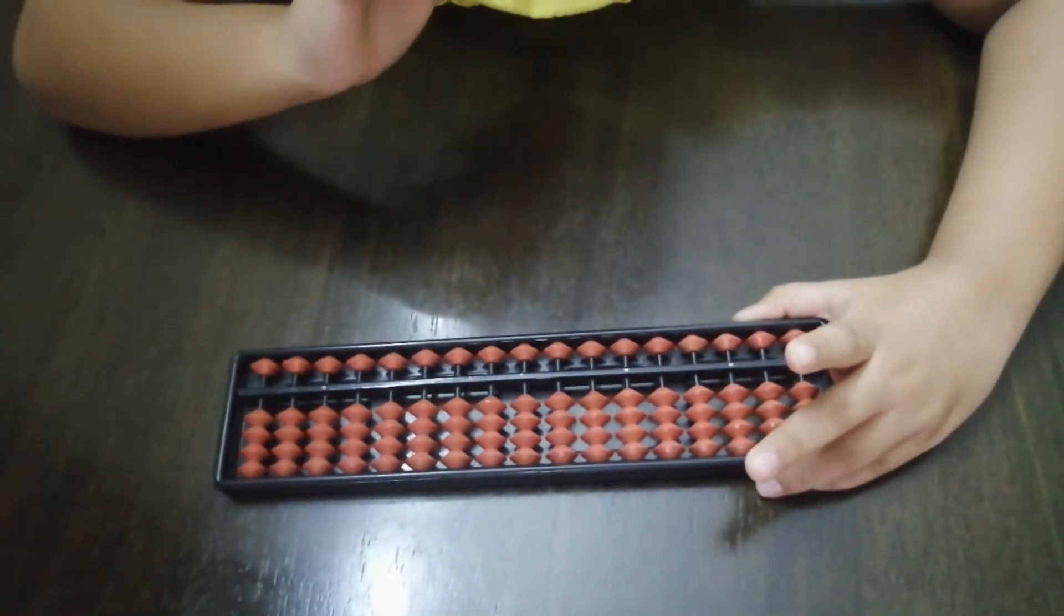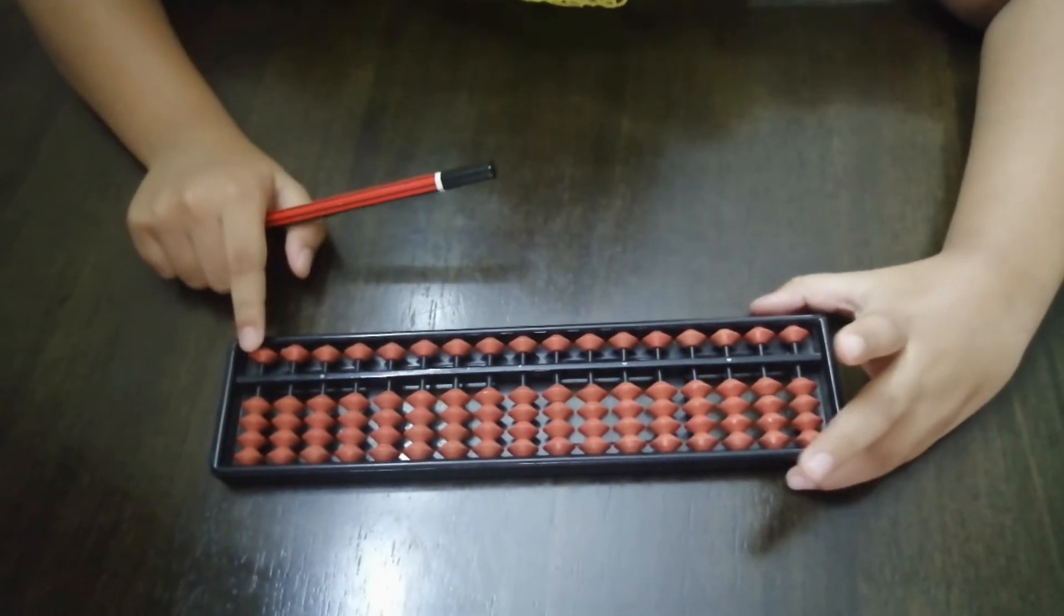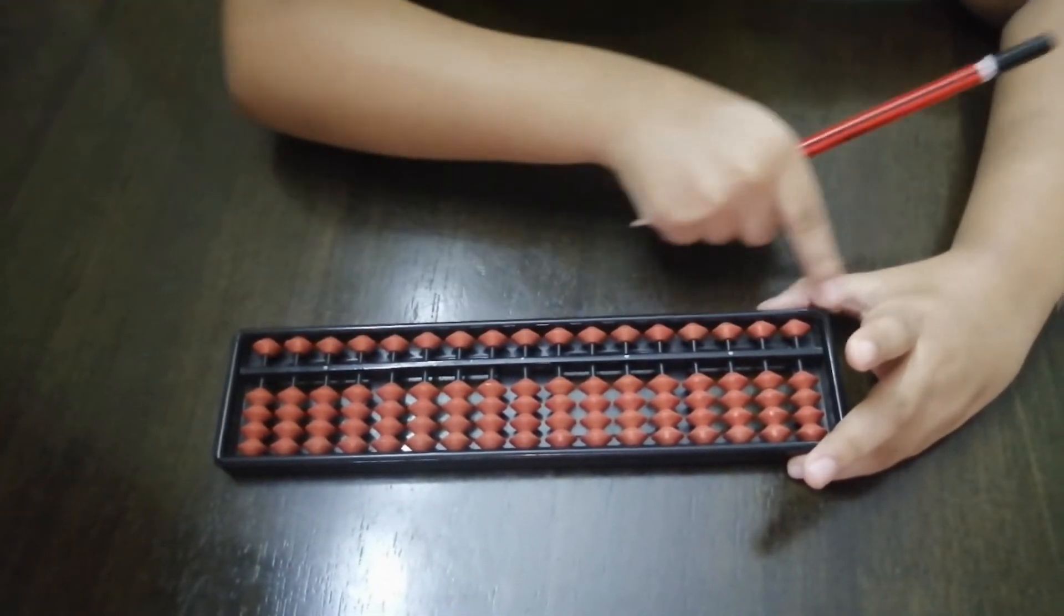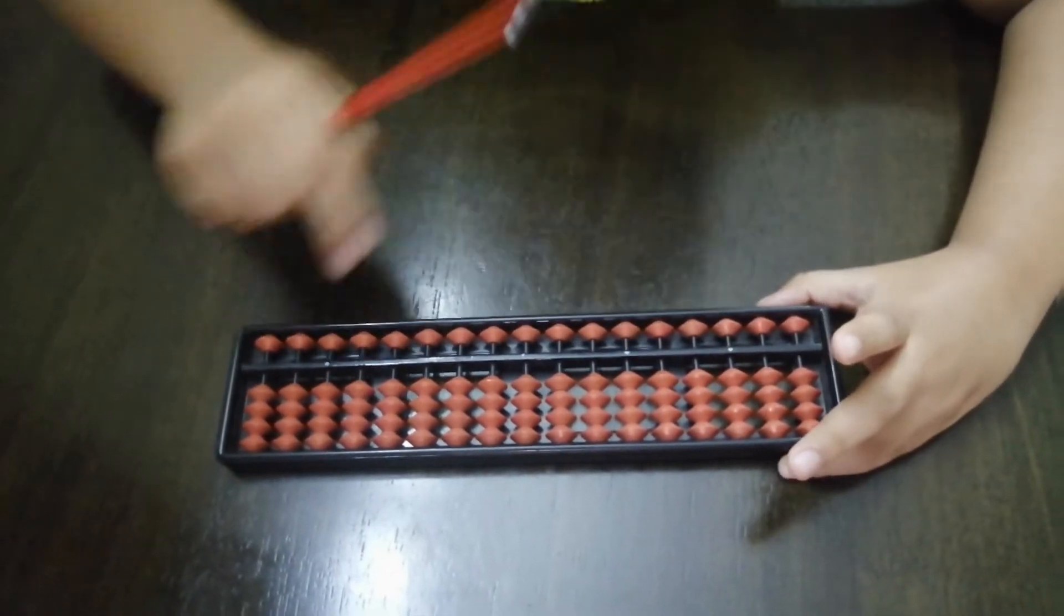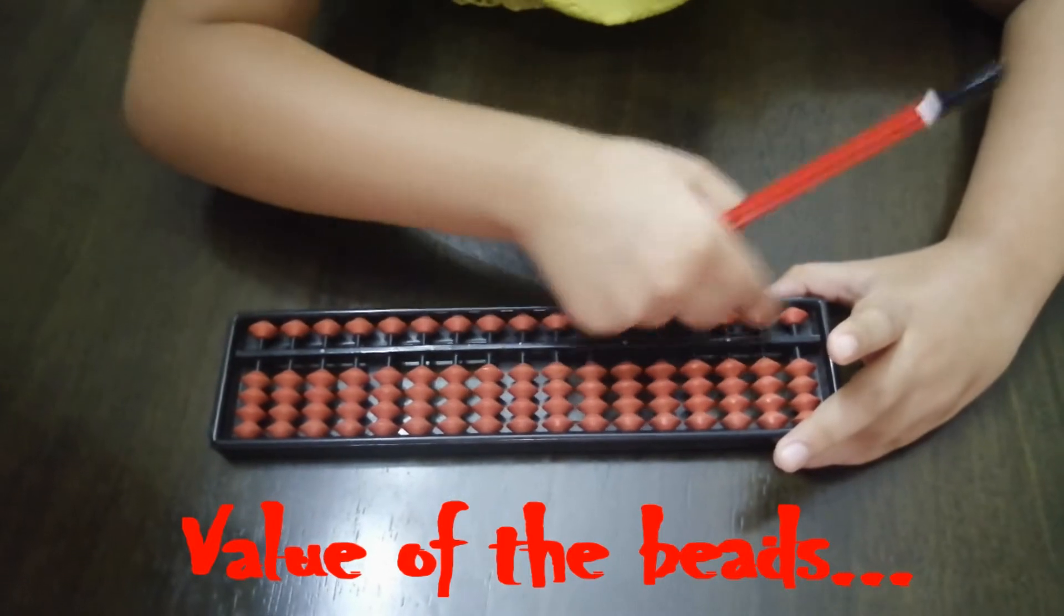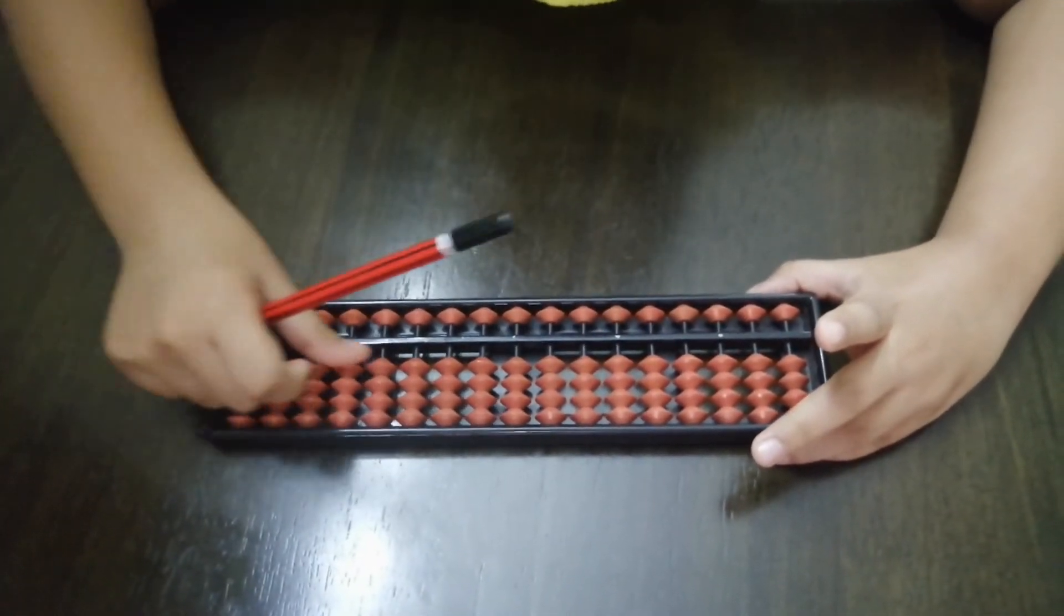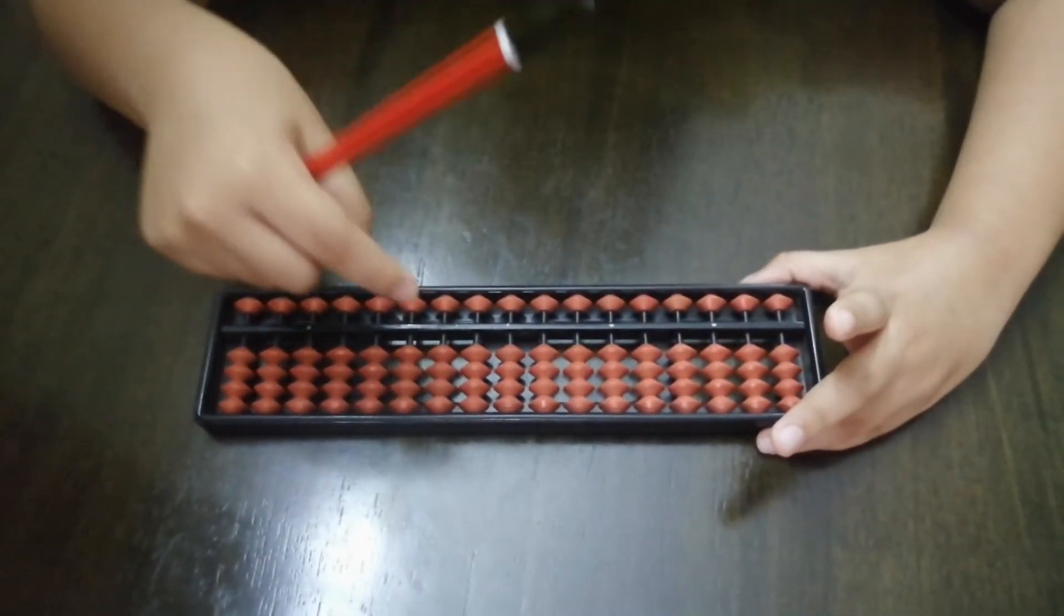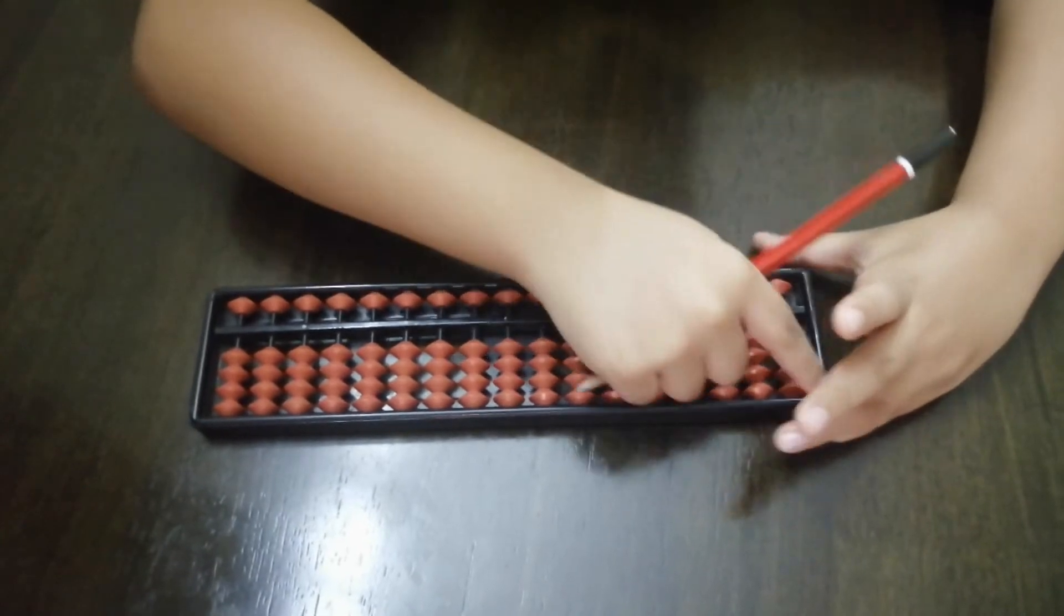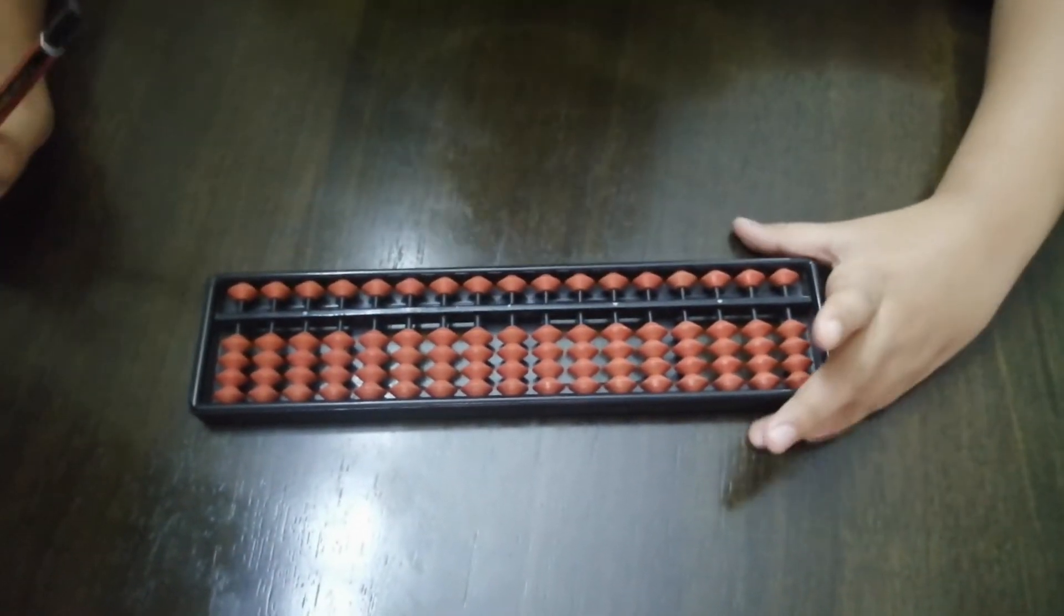Let me give you the instructions of the Abacus. The upper part, the upper beads are called upper beads. The value of the upper beads is 5, and the value of the lower beads is 4. This is a bar, and this is a frame of the Abacus tool.